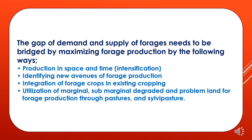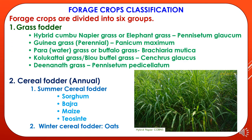Forage crops enhance seasonal distribution of forage production throughout the year to complement warm season perennial grasses. They also reduce weed development and soil erosion. The gap of demand and supply of forages needs to be bridged by maximum forage production through: intensification, identifying new avenues of forage production, integration of forage crops in existing cropping systems, and utilization of marginal, sub-marginal, degraded and problem land through pastures and silvipasture.